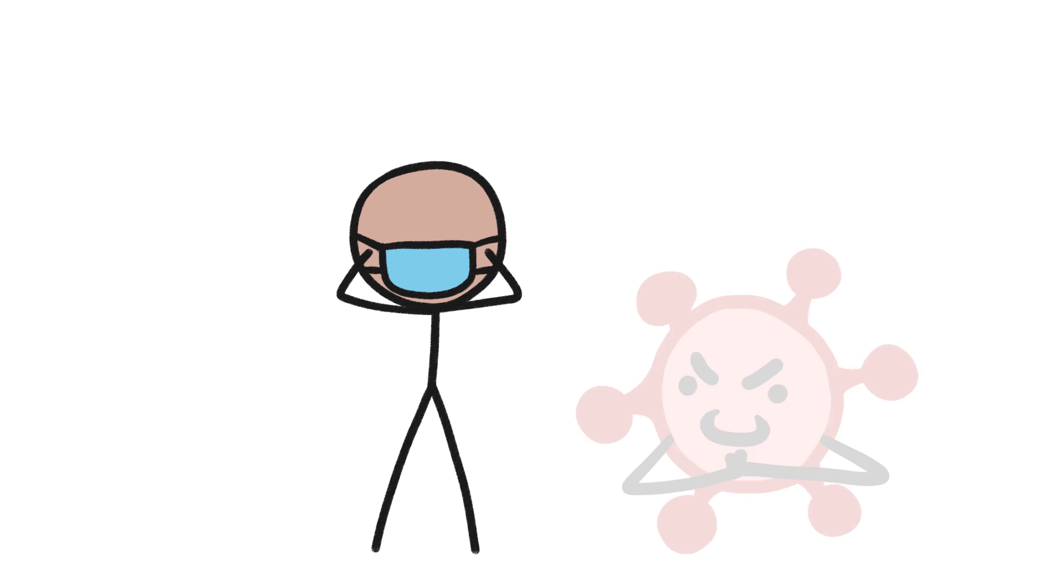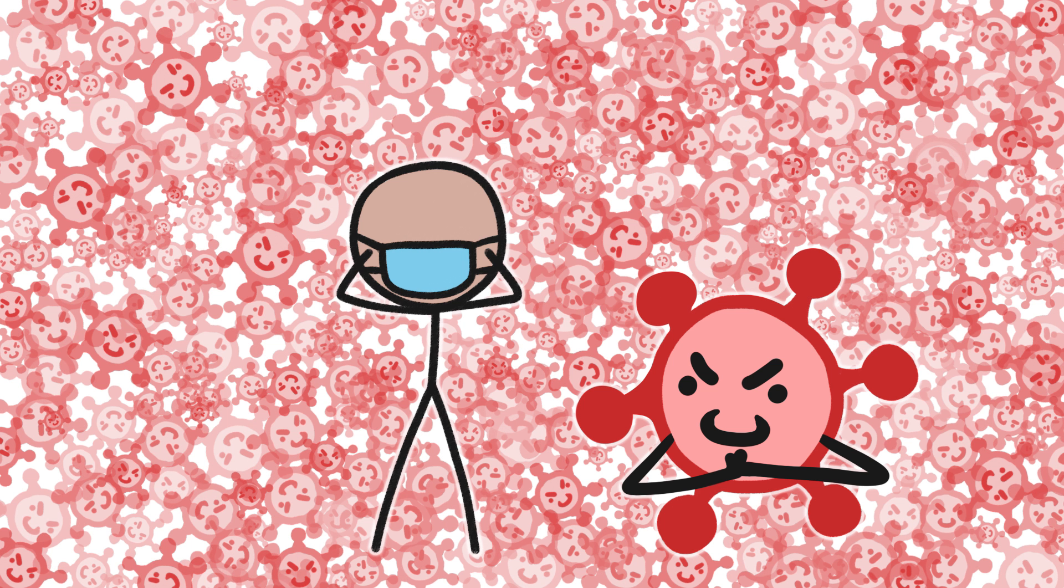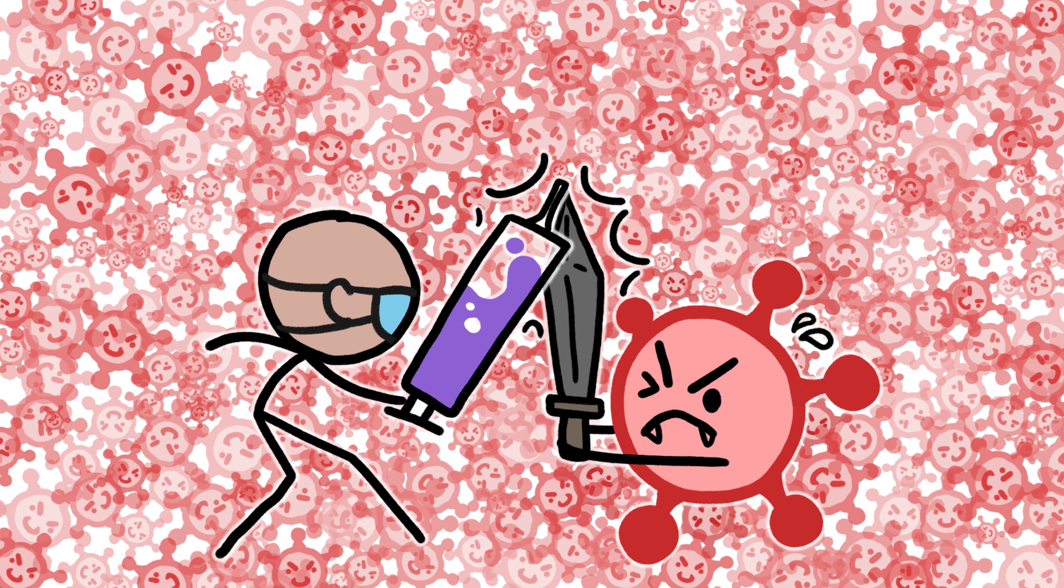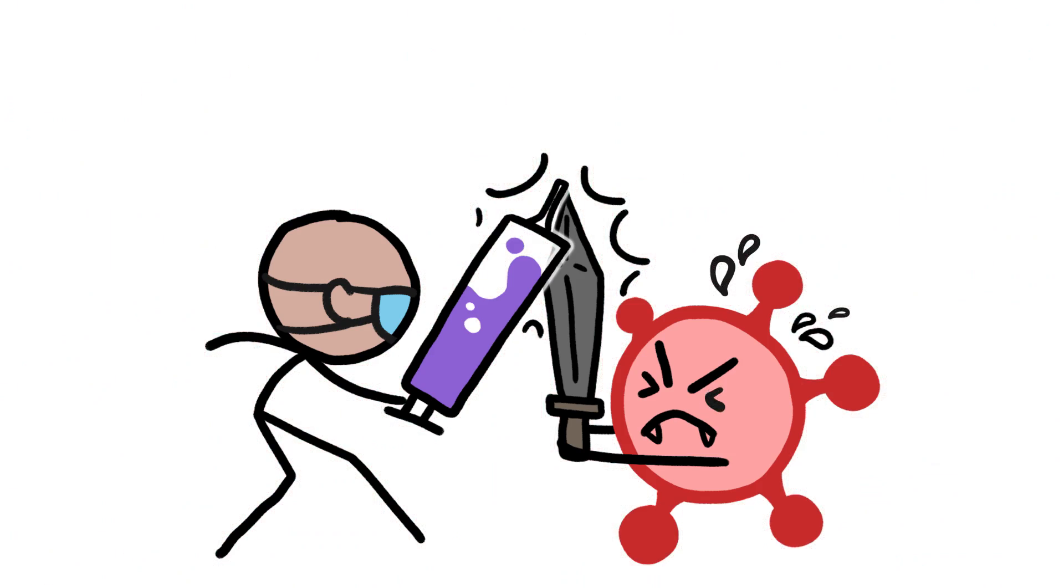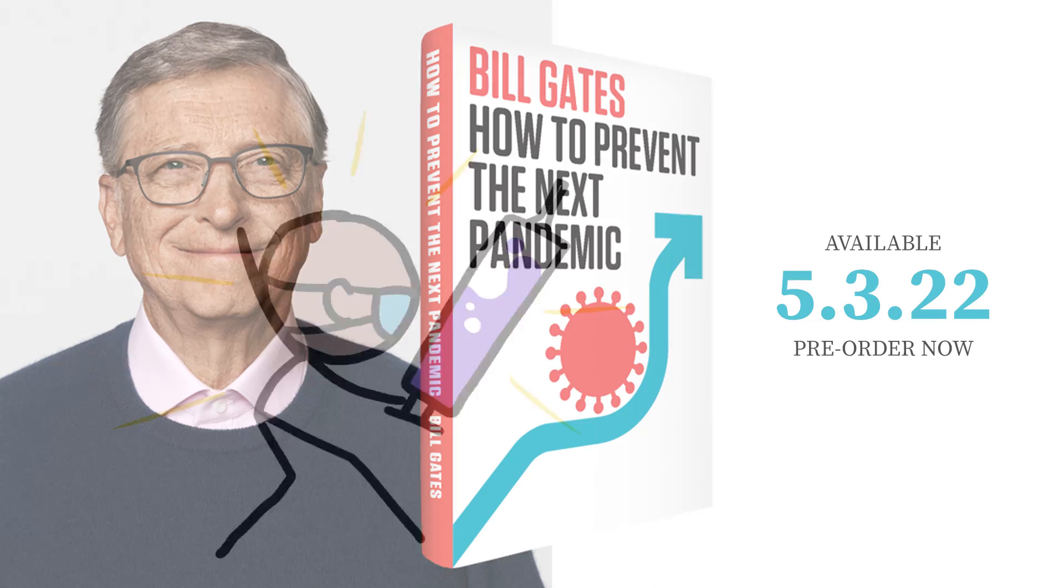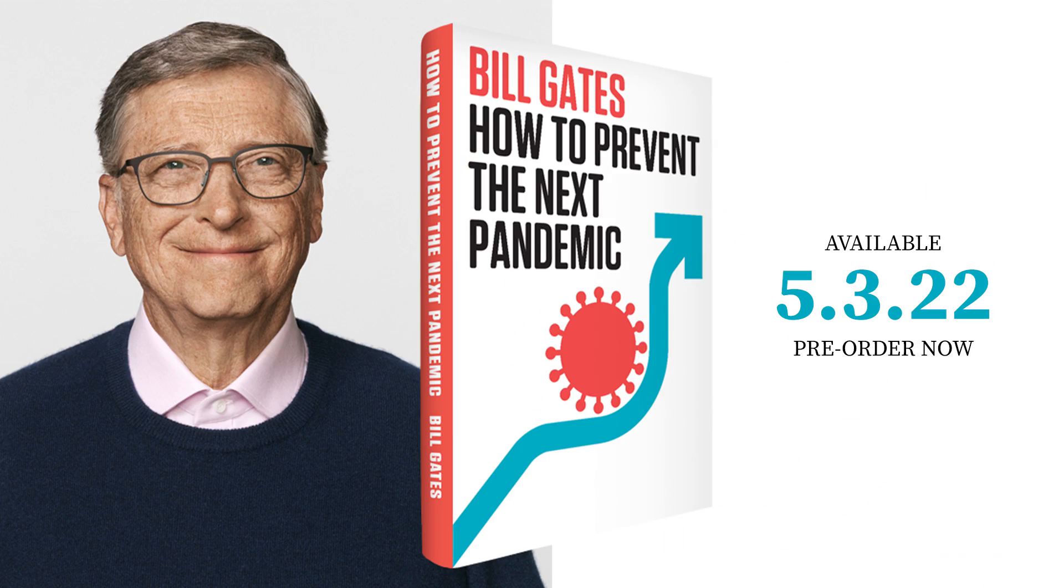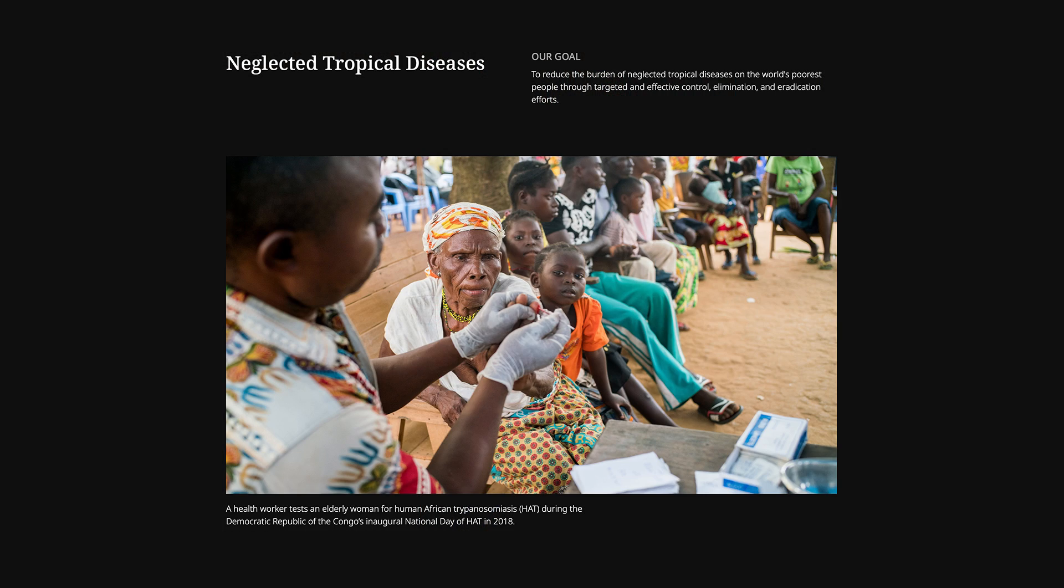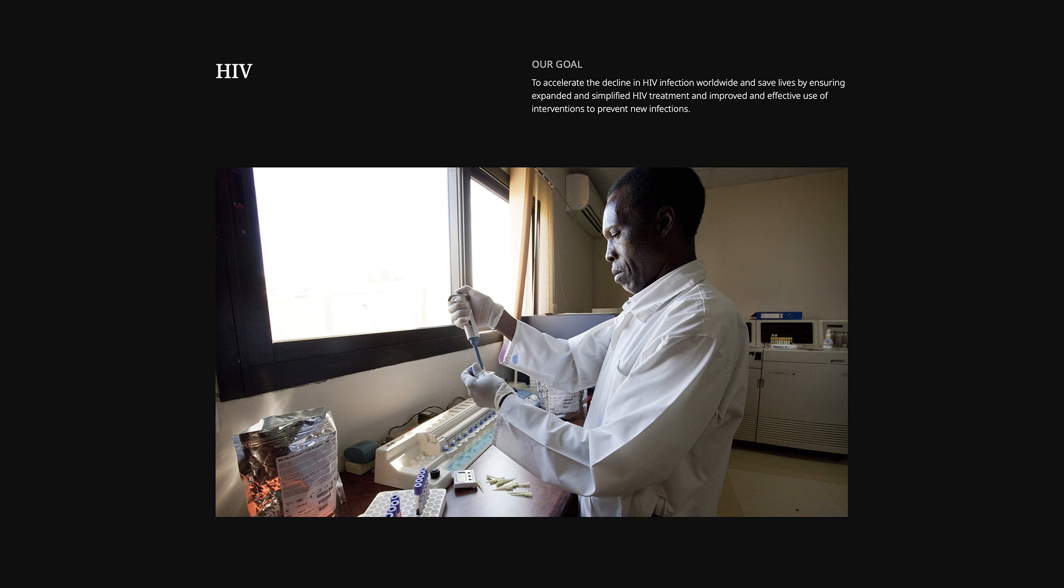As we've seen over the last few years with COVID-19, preventing the spread of novel diseases is super important. And if you want to understand what would go into a worldwide plan to stop future pandemics from happening, check out Bill Gates' new book, aptly titled How to Prevent the Next Pandemic. Thanks to Bill for sponsoring this video, and for the work his foundation has done to ease the burden of disease around the world.